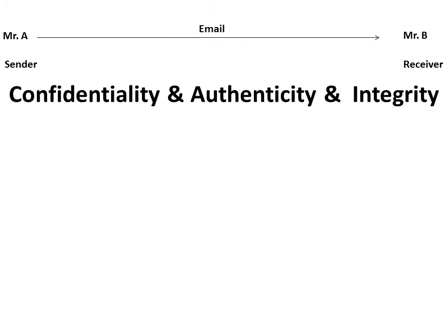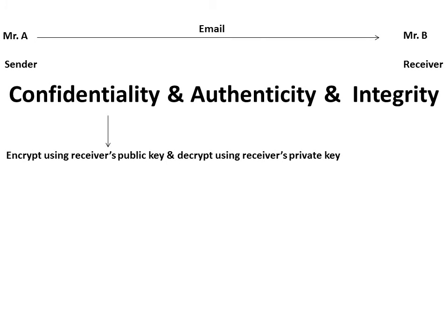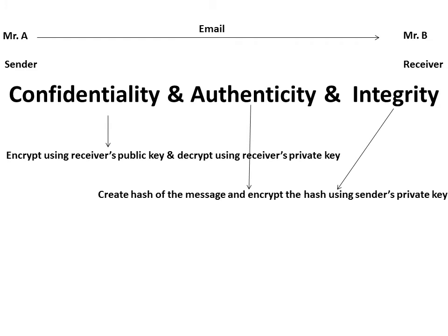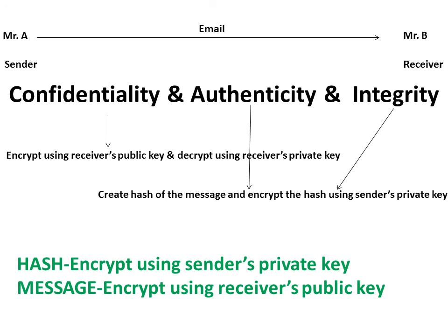When the objective is confidentiality, authenticity, and integrity: for confidentiality, we use the receiver's public key. For authenticity and integrity, we create the hash of the message and encrypt the hash using the sender's private key. Then we encrypt the full message using the receiver's public key, which gives us confidentiality.